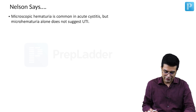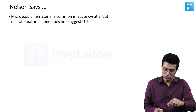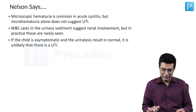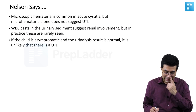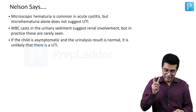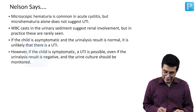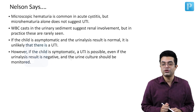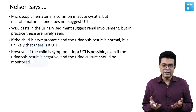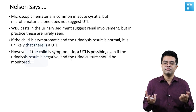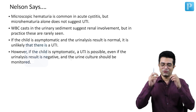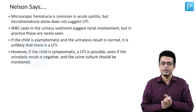Nelson makes a few key points. First, microscopic hematuria is common in acute cystitis, but microhematuria alone does not suggest UTI. Second, WBC casts suggest renal involvement, but in practice these are rarely seen. Third, if the child is asymptomatic and urine analysis is normal, UTI is unlikely. Fourth, if the child is symptomatic, UTI is possible even if urine analysis is negative — so a urine culture should always be performed. In other words, urine culture along with signs and symptoms is diagnostic of UTI.